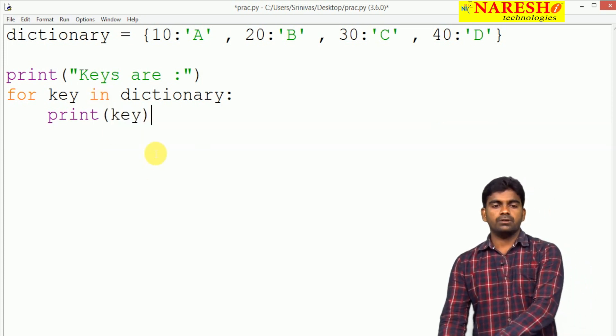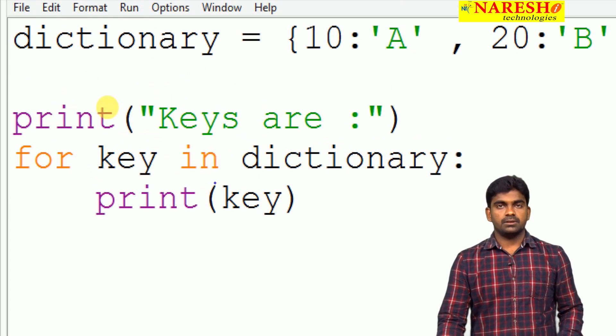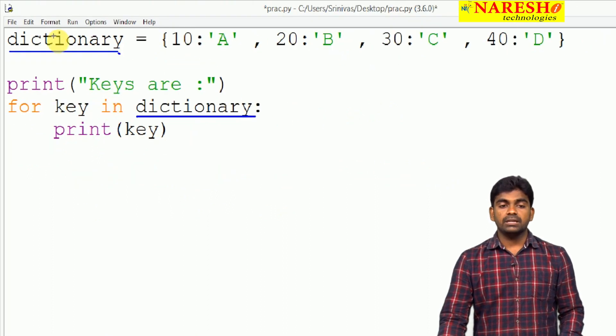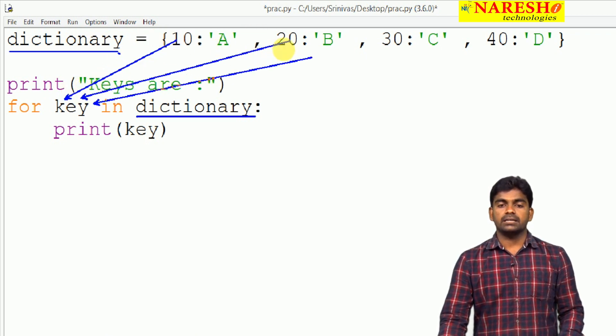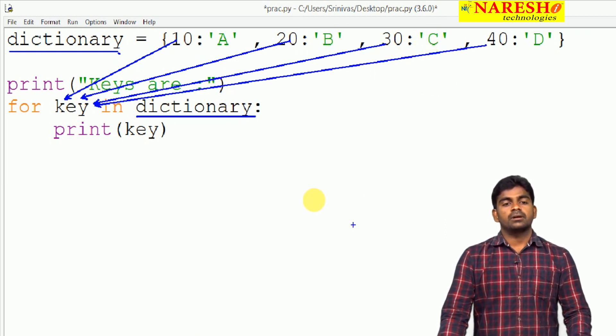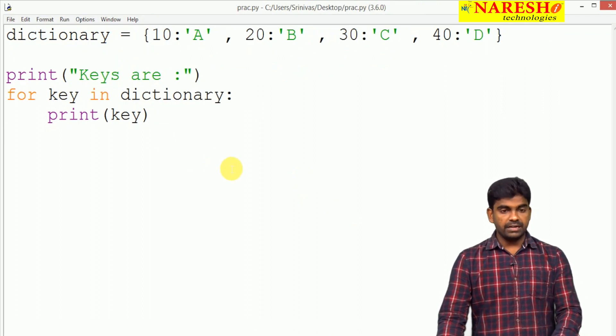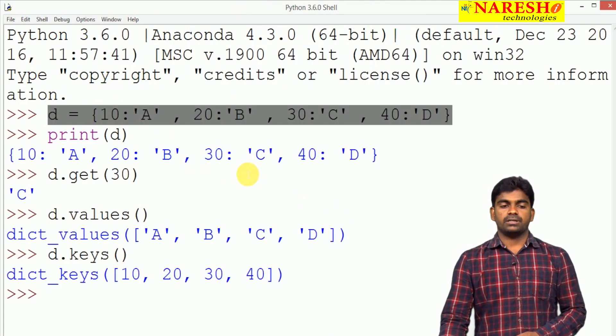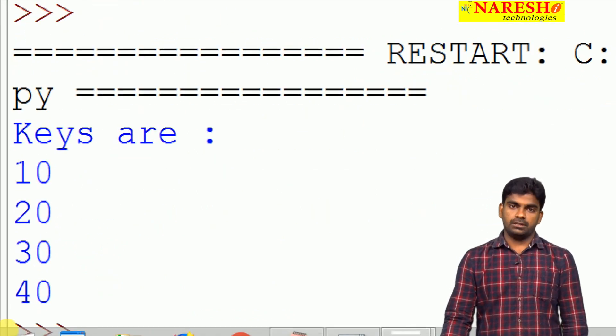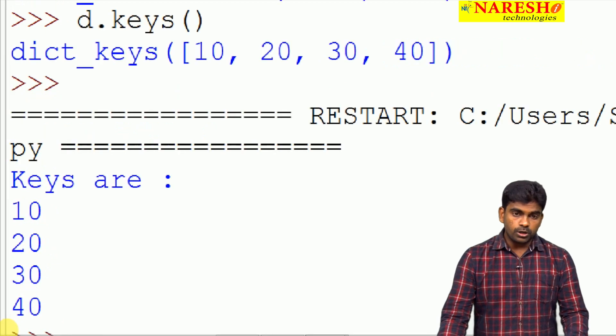How it will execute? From the given dictionary object, one by one it will collect the first key 10, second one is 20, it will iterate the keys automatically, 30, 40, like this it will write keys. When we are executing this one, look at this, keys are 10, 20, 30, 40.